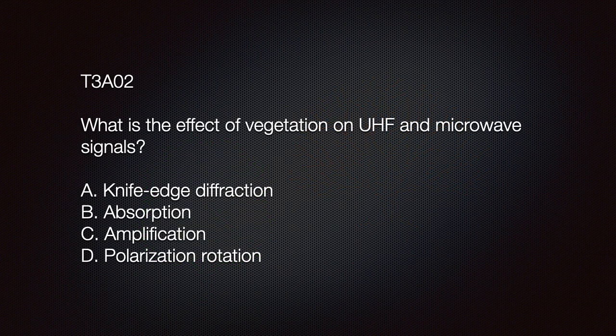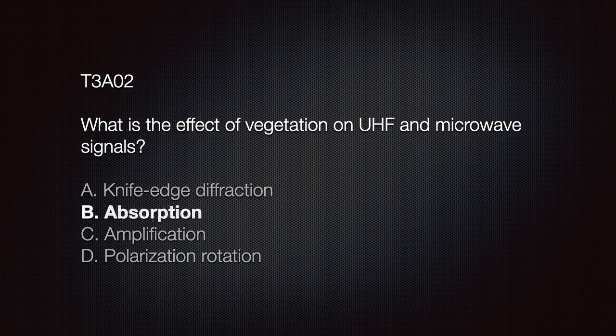The exam question: What is the effect of vegetation on UHF and microwave signals? Options: A — knife edge diffraction; B — absorption; C — amplification; D — polarization rotation. The correct answer is B: absorption.